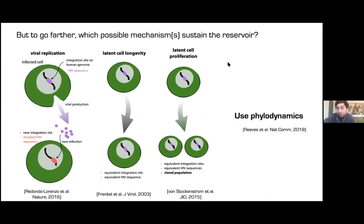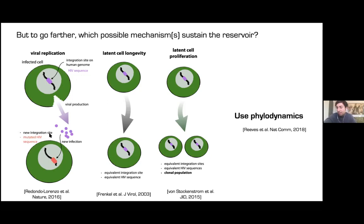To get more mechanistic about what's sustaining the reservoir, we considered a few possibilities. First, viral replication might continue even though you can't see it with normal tests — viruses still infecting new cells in a site with insufficient drug — producing mutated sequences and new integration sites. Second, latently infected cells might simply be living for a long time, since T cells naturally have long half-lives, in which case you'd see the same integration sites and HIV sequences staying static over time.